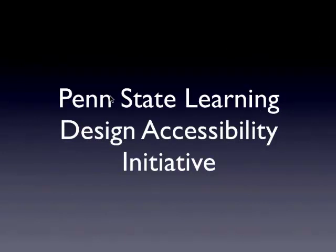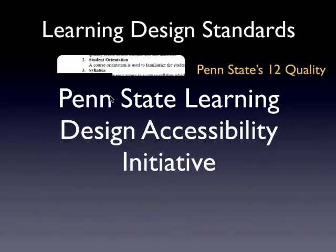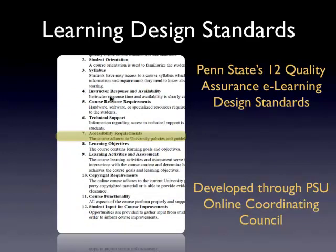Now let's look at Penn State's learning design and how we've structured the way we deliver our content to help with this. The university has established 12 quality assurance design standards for all courses. One of those, point number seven, is accessibility. As we're designing our courses and matching them to these standards, we realize that accessibility is one of them. As we're picking media and creating learning design strategies, we have to keep in mind what a reasonable accommodation is for all the different types of disabilities out there.